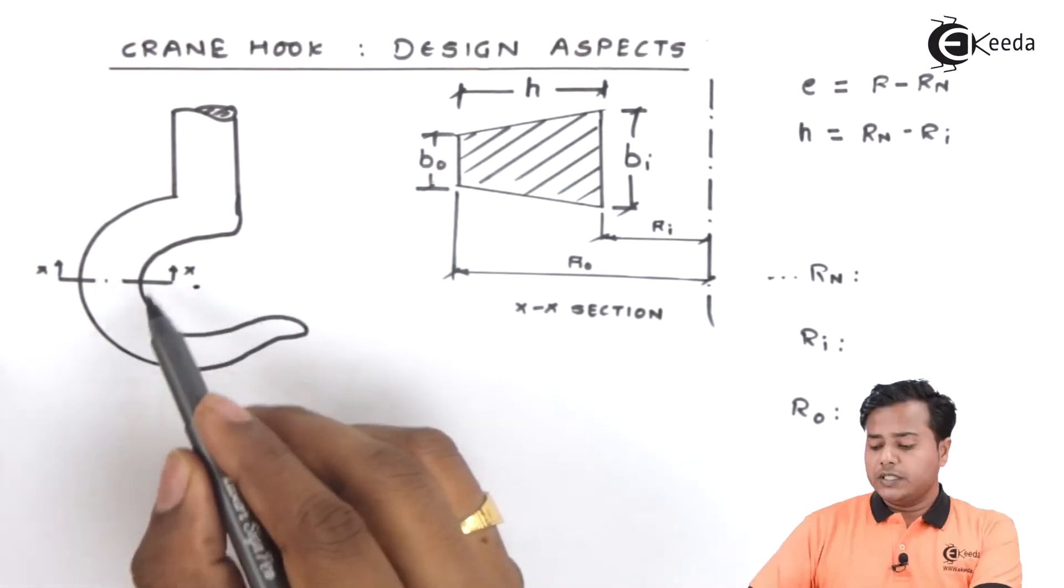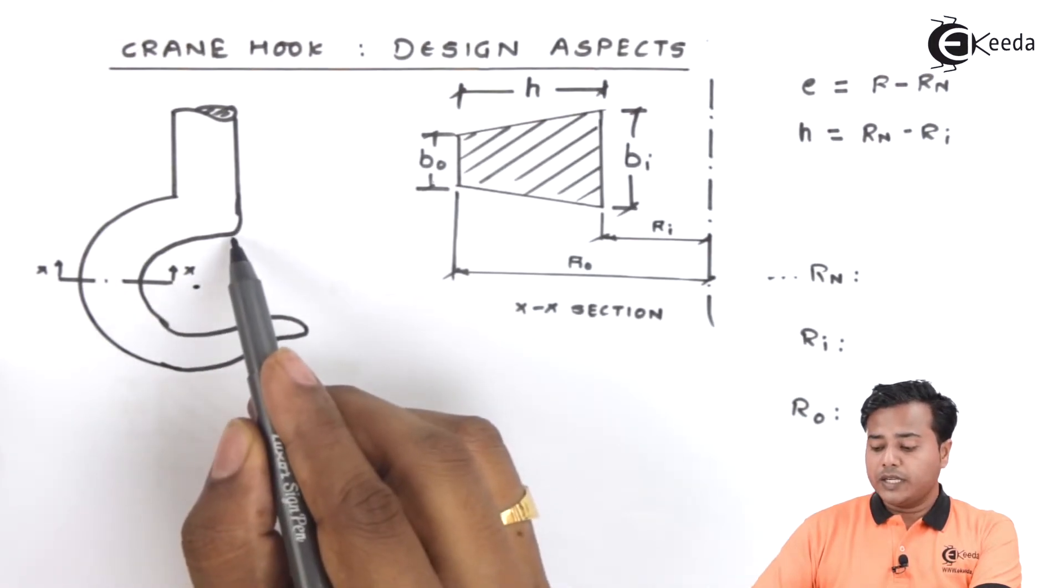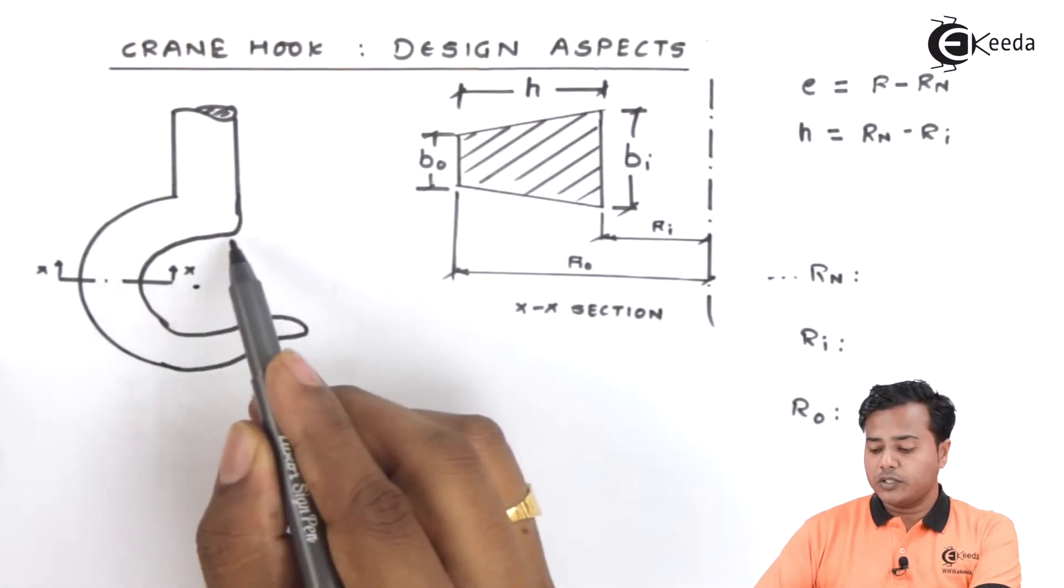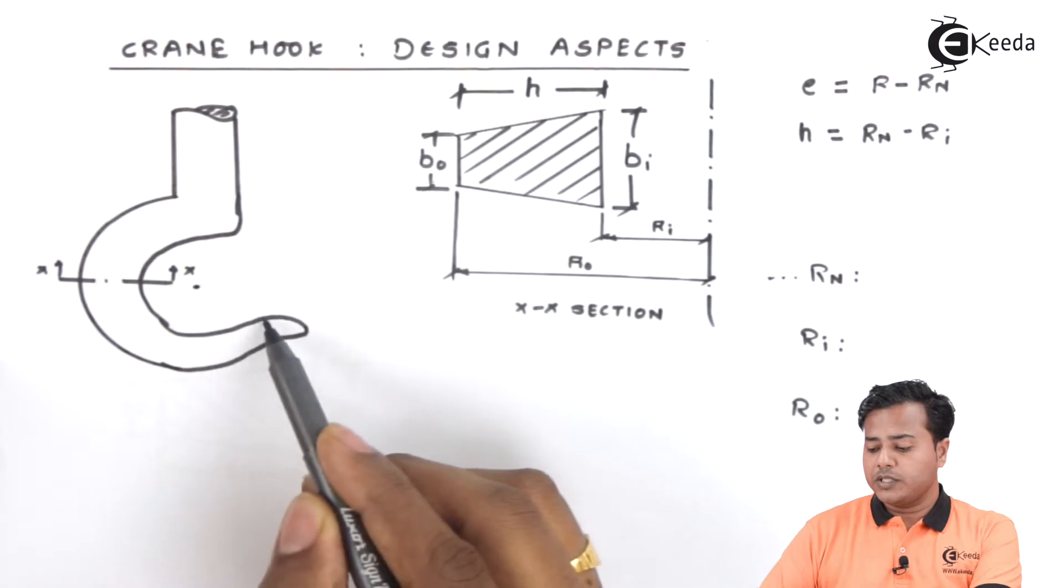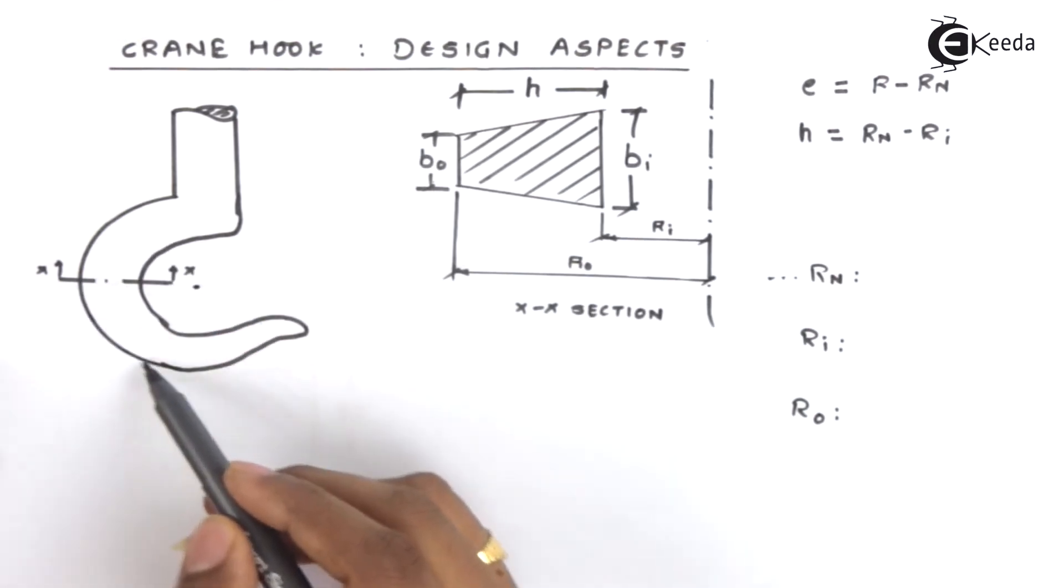Let me consider that for this curve there is a uniform radius for the majority part. Of course you cannot say that there is a radius which is constant right from this point up to this. But for the major portion the radius is constant. The same thing applies to this portion.